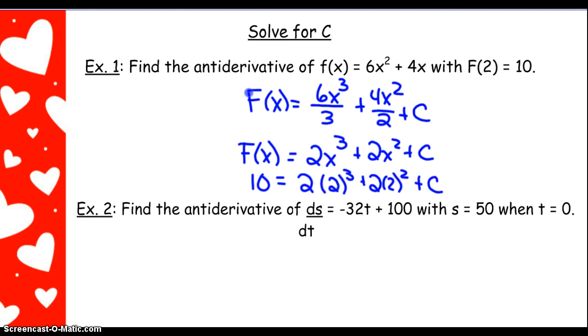And we're going to solve for c. It's that nice. So we have 2 cubed is 8. 8 times 2 is 16 plus 2 squared, 4 times 2 is 8. So I'll slide up here. I have 10 equals 16 plus 8 is 24 plus c. So c is negative 14.